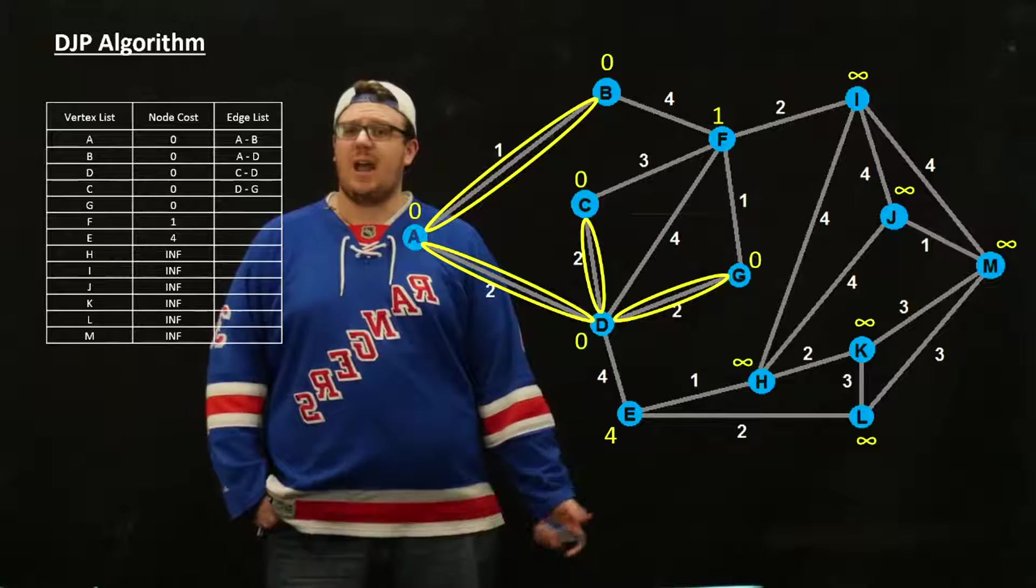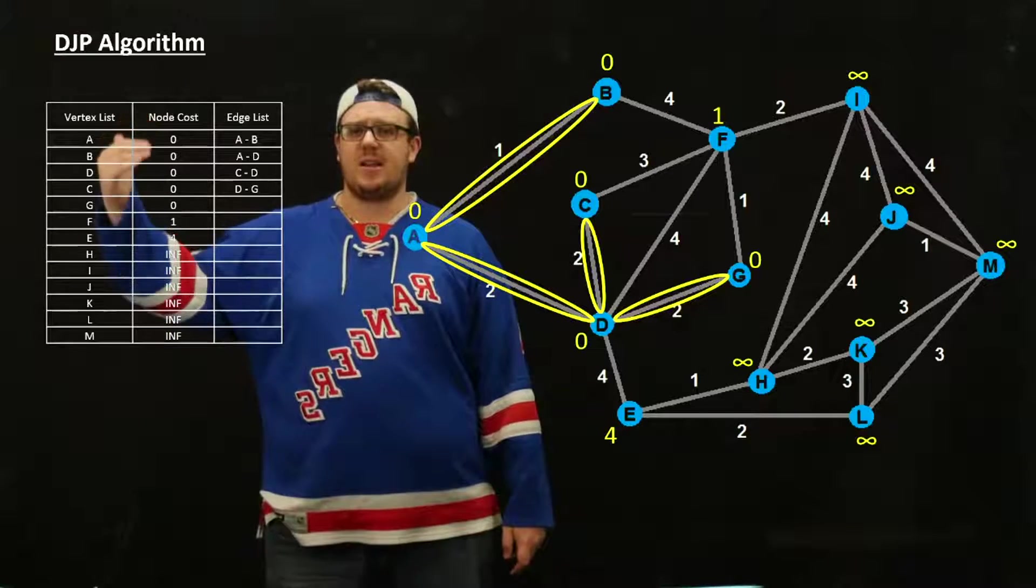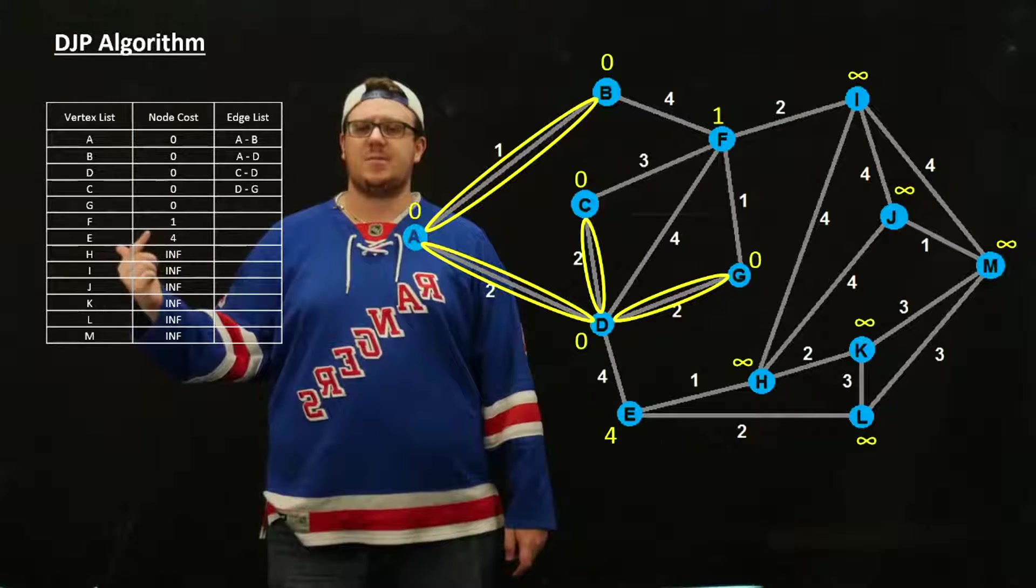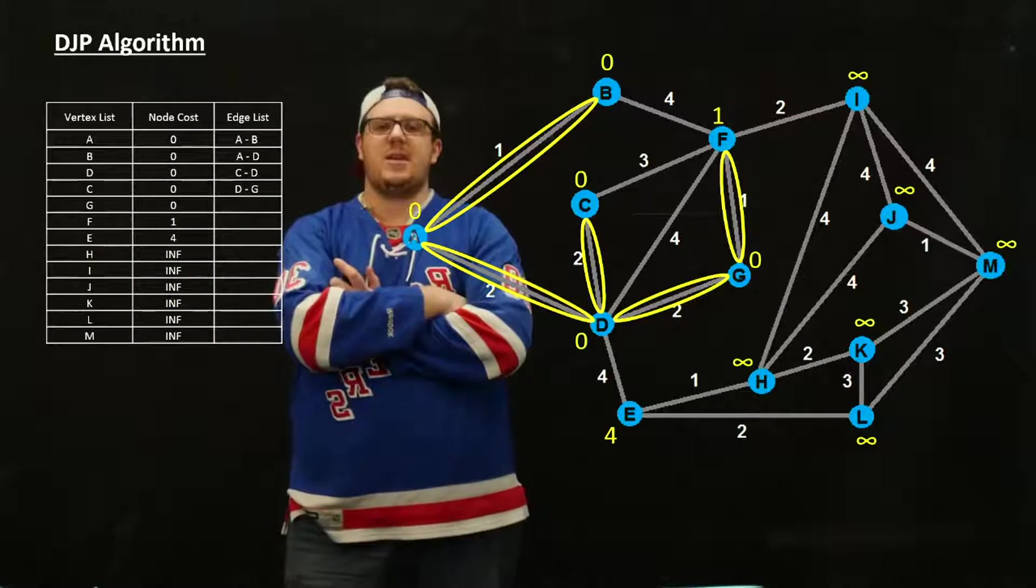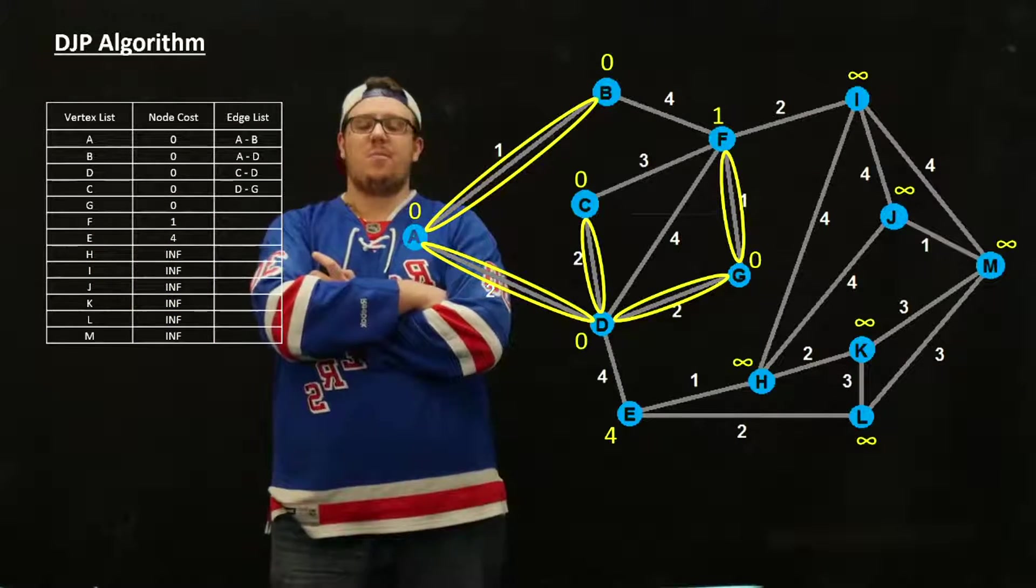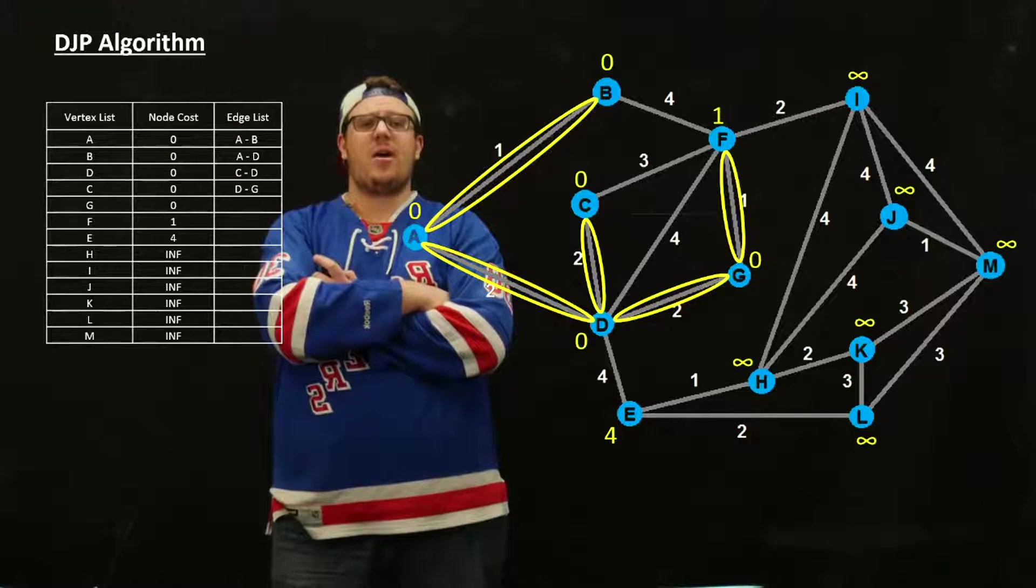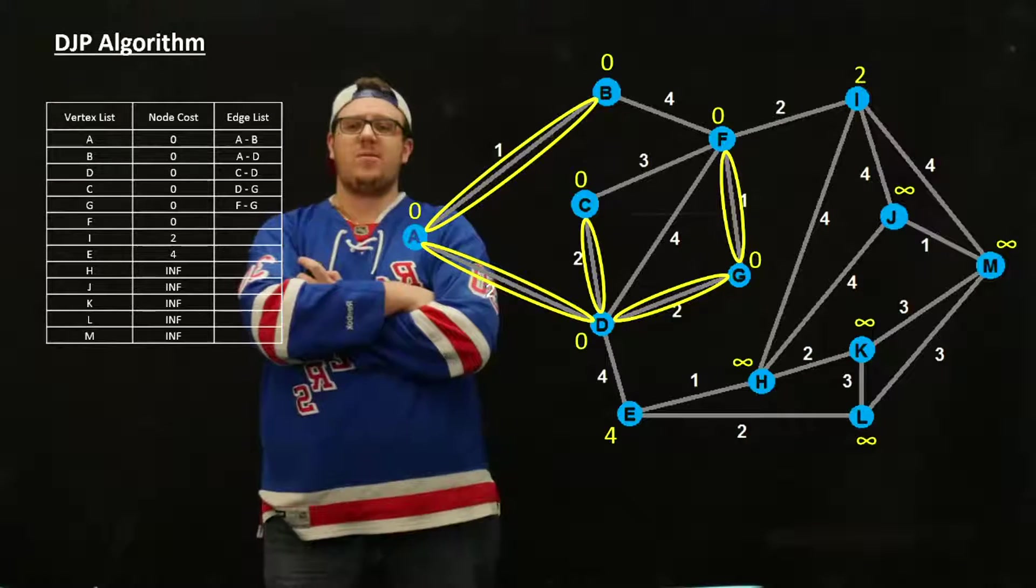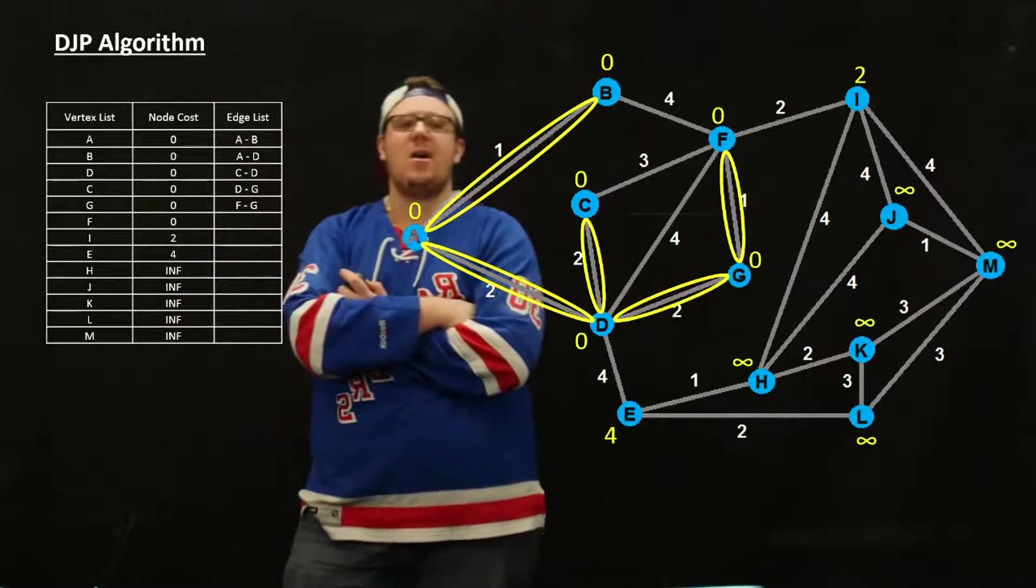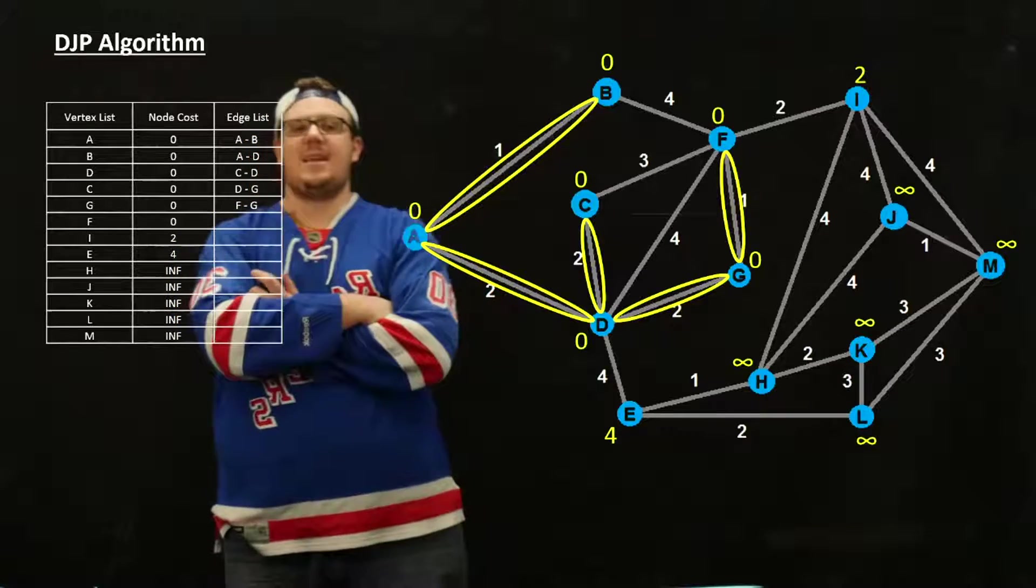So the next one is F, obviously. The next smallest one is 1, which is corresponding to F. We update F by adding a zero, and then we can put I in the tree as a possibility as well. So we have 2 and 4. Our possibilities now are I and E. I has a weight of 2, E has a weight of 4.